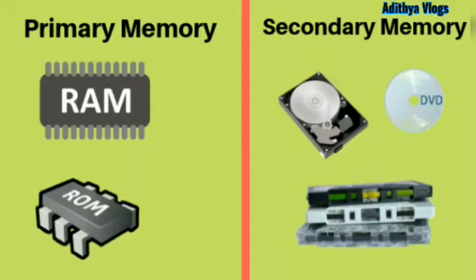Now we are going to fill in the blanks. First question: A blank is the smallest unit of data in a computer. The answer is: a bit is the smallest unit of data in a computer. Second question: A set of instructions, also called a program, which makes the hardware work is called the blank. The answer is: software. Third question: Blank and blank are examples of system software of a computer. The answer is: DOS and Windows.